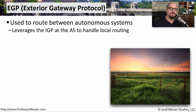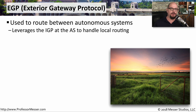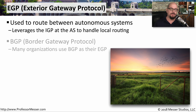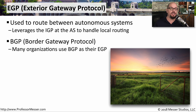Our networks go much farther than just our internal communication. We need some way to communicate to the outside world, to a partner, or across the internet. We use an EGP, or Exterior Gateway Protocol, to provide this communication between autonomous systems. One of the most popular routing protocols used for this exterior gateway communication is BGP, or Border Gateway Protocol.